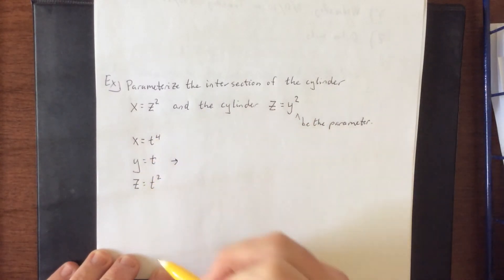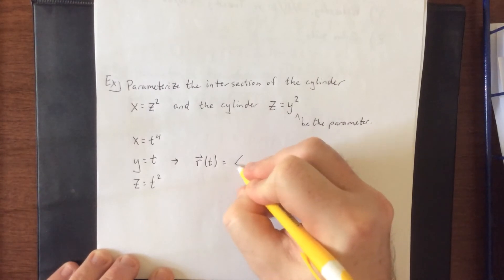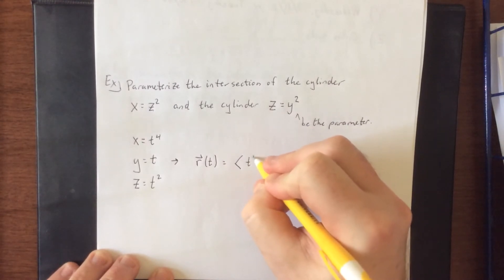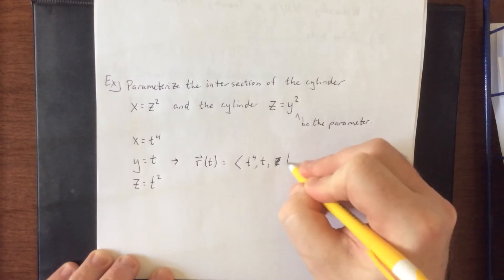Now this would be the parametric form of it. If we wanted to write this as a vector function for our space curve, we could say x is t to the fourth, y is t, and z is t squared.